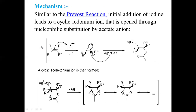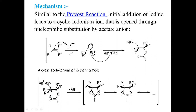Now let us see the mechanism of Woodward's dihydroxylation. Similar to Prévost dihydroxylation, the initial addition of iodine leads to the formation of a cyclic iodonium ion. This cyclic iodonium ion undergoes nucleophilic substitution with acetate ions. The acetate ion attacks onto this carbon, the carbon–iodine bond gets cleaved, and you get the monoester. As in the Prévost mechanism, neighboring group participation takes place here also, leading to cleavage of the carbon–iodine bond, iodine is liberated as silver iodide, and a cyclic acetoxonium ion intermediate is formed.